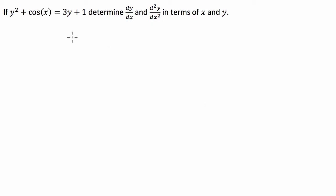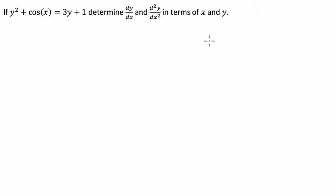G'day guys, we've got an implicit differentiation question today where we've got the relationship y squared plus cosine of x is equal to 3y plus 1, and we have to find the first and second derivatives with respect to x in terms of x and y.